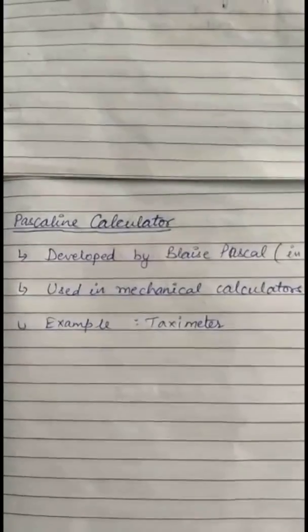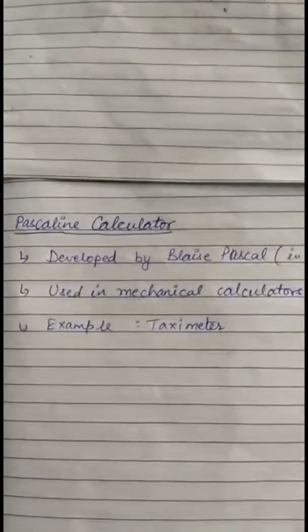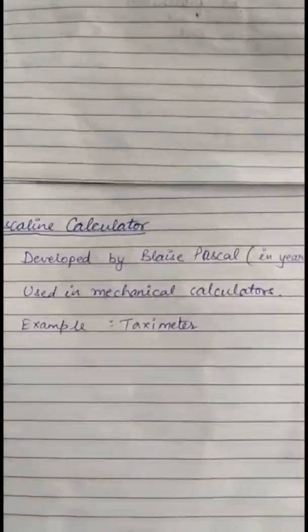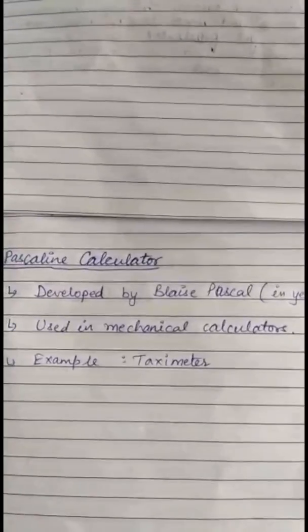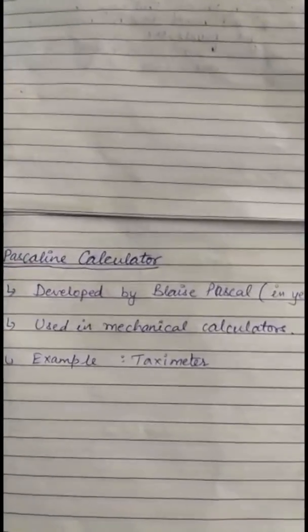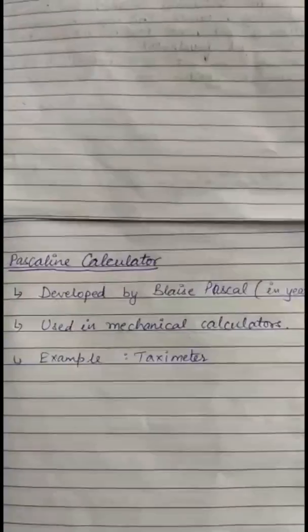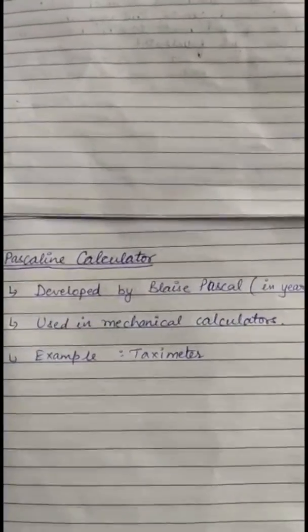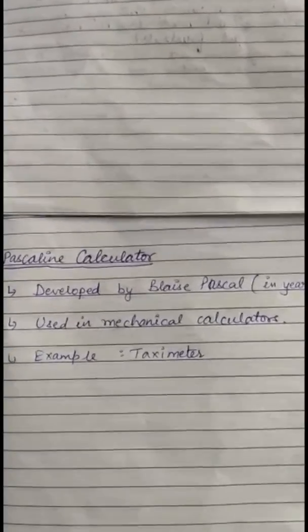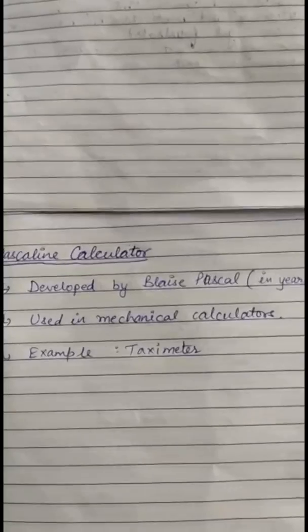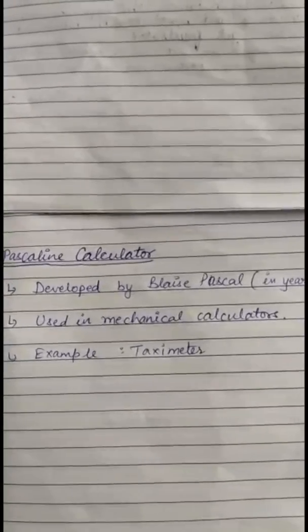Later on, the Pascaline calculator was developed. In the year 1642, Blaise Pascal, a French mathematician, invented the first mechanical calculator, which was called the Pascaline calculator. This Pascaline calculator looked like a rectangular box used as a mechanical calculator. An example of the Pascaline calculator is the Taximeter.